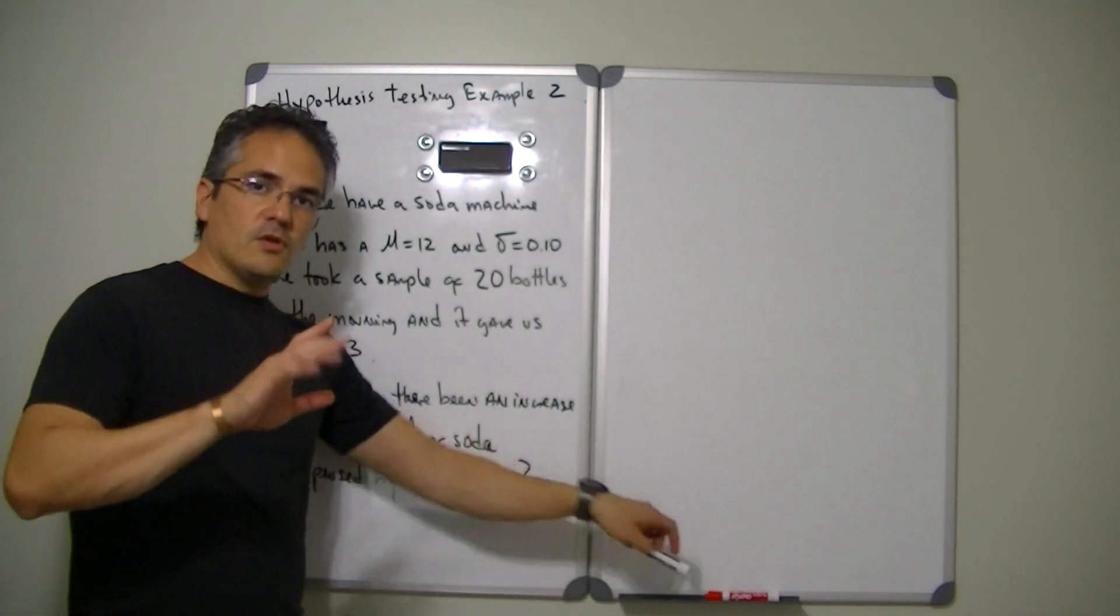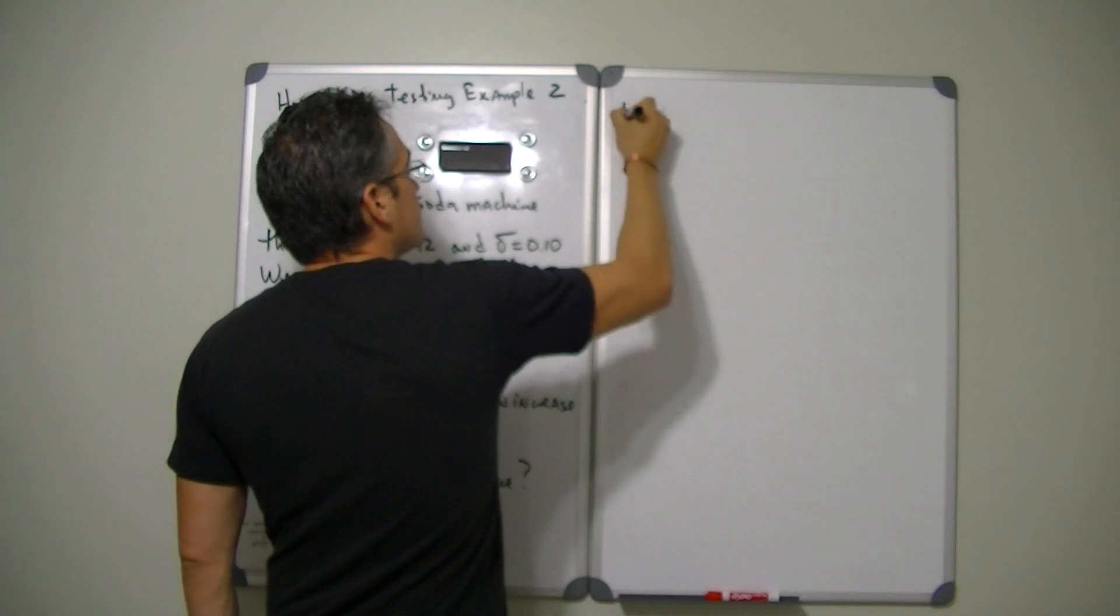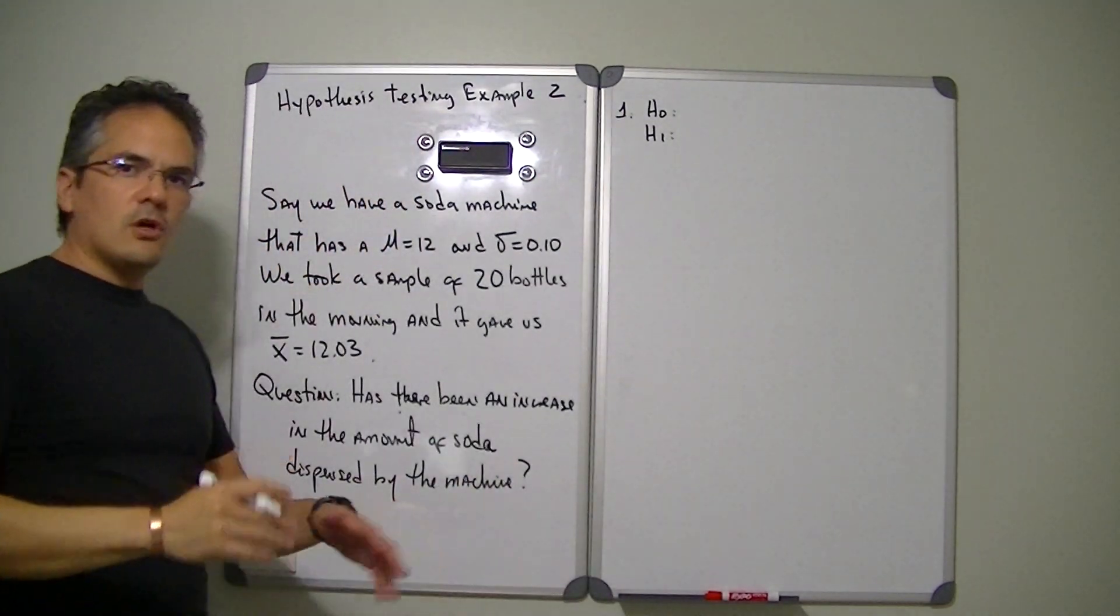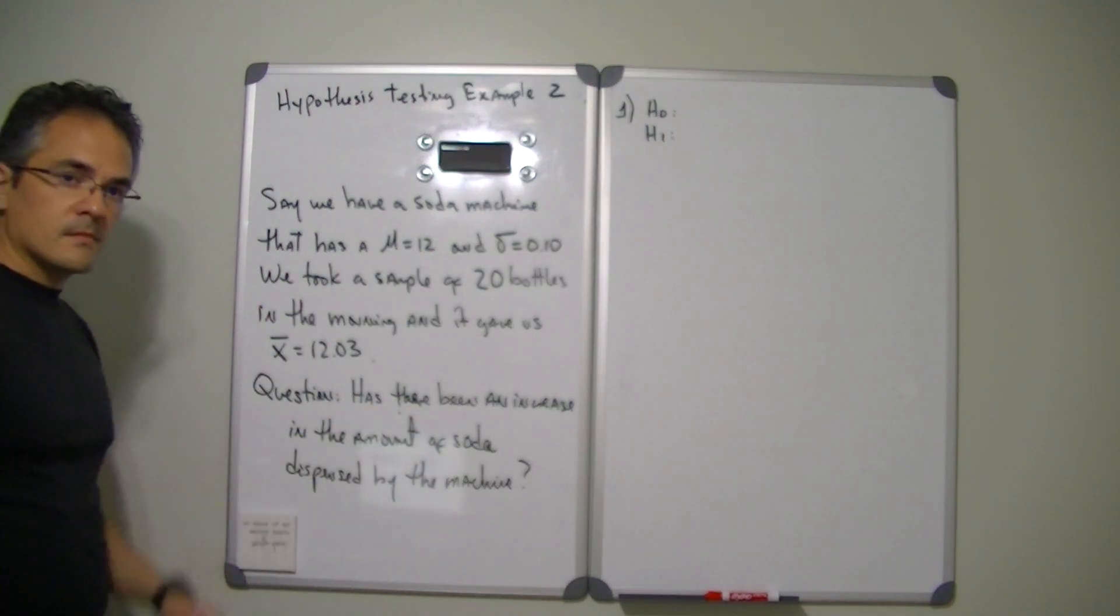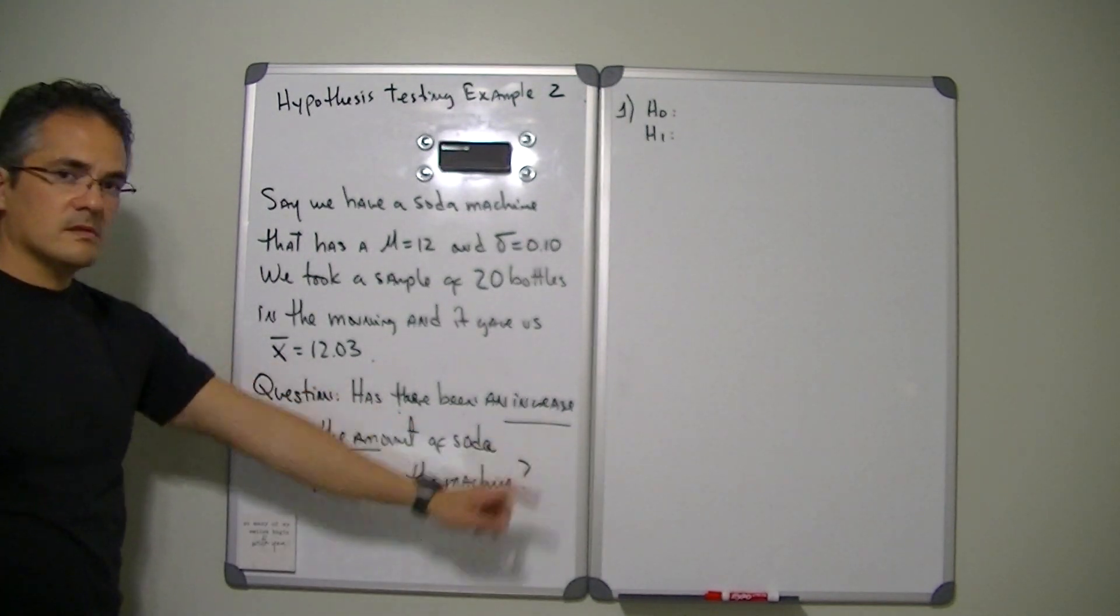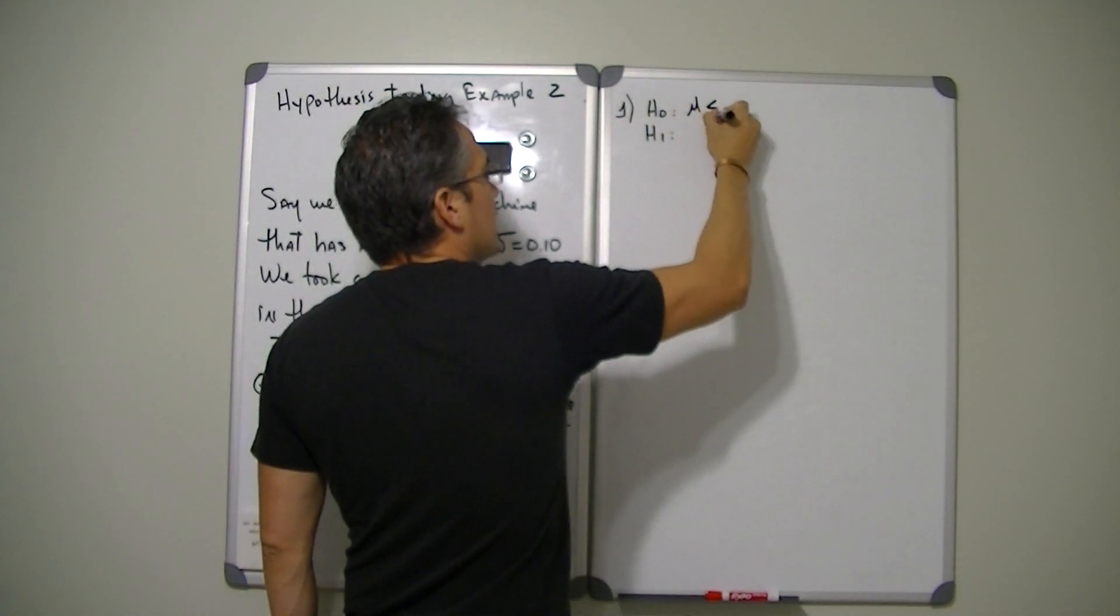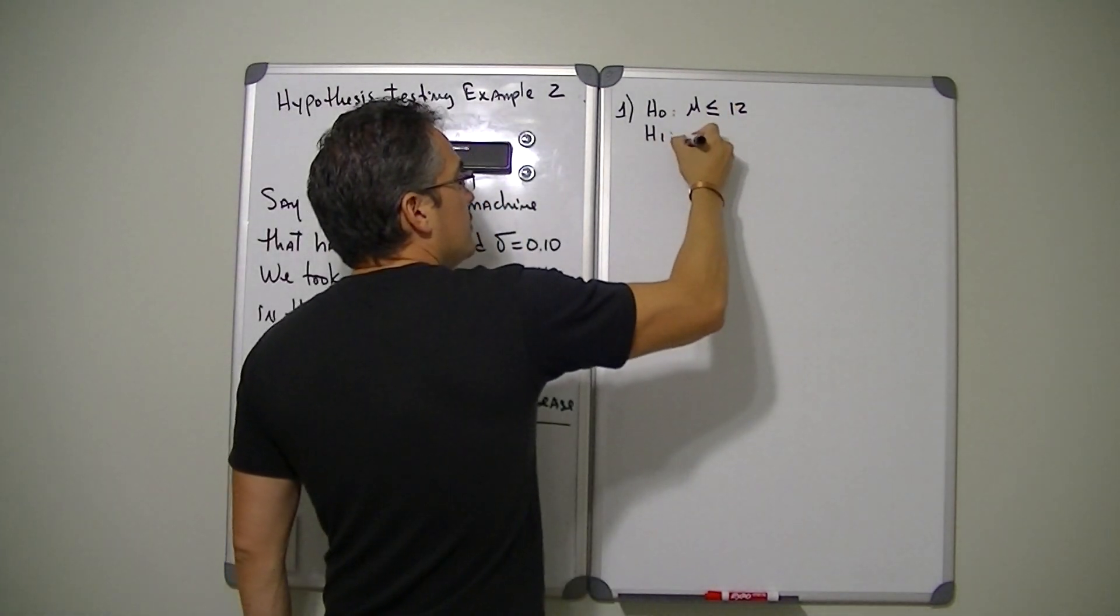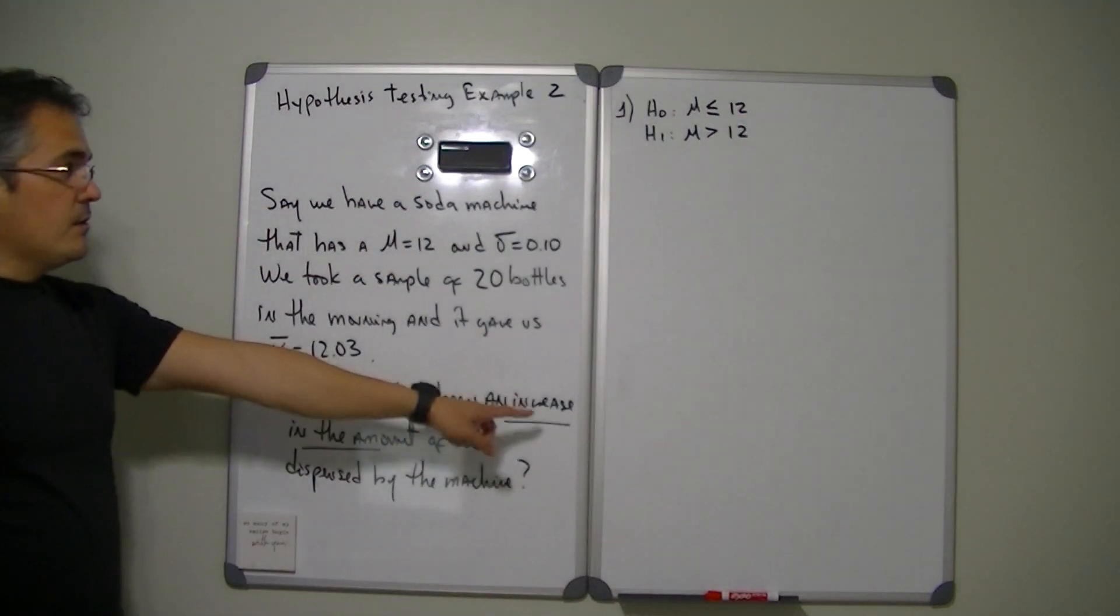All right, so let's go through the five steps of hypothesis testing using this example. Step number one, we have to declare our H0 and our H1. Remember H0 is our null hypothesis. The hypothesis depends on the question. The question says has there been an increase in the amount of soda, increase is what we want to know. So we're going to set up our H0 as mu less than or equal to 12 and we're going to set up our H1 as mu greater than 12 because the question says increase.